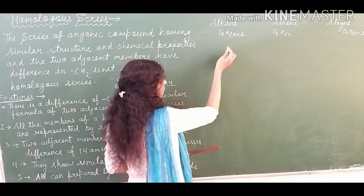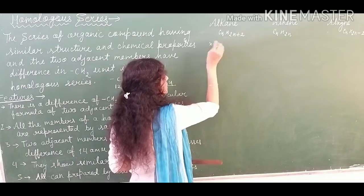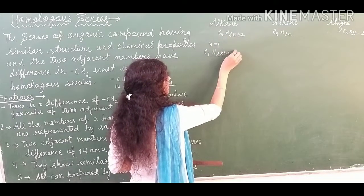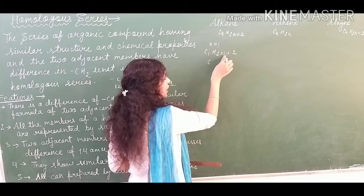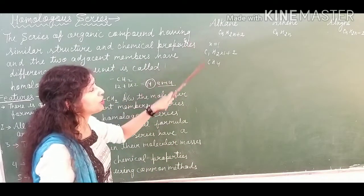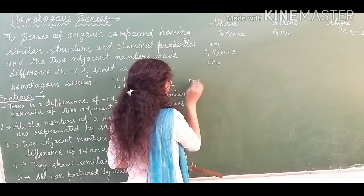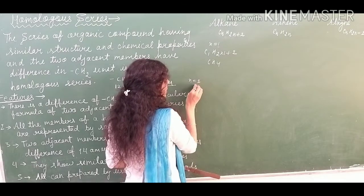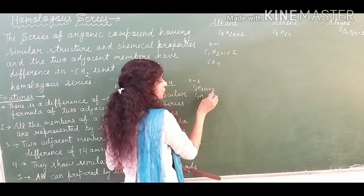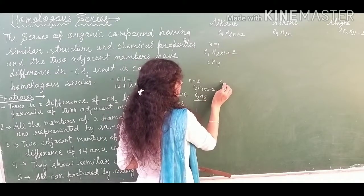Now let's make the homologous series of alkane. Taking the value of N = 1 and putting it in the formula CₙH₂ₙ₊₂, you get C₁H₍₂×₁₊₂₎, which gives CH₄. So CH₄ is the first member of the alkane homologous series. Now for the second member, taking N = 2, you get C₂H₍₂×₂₊₂₎ = C₂H₆. So we have CH₄ and C₂H₆ as the first two members.